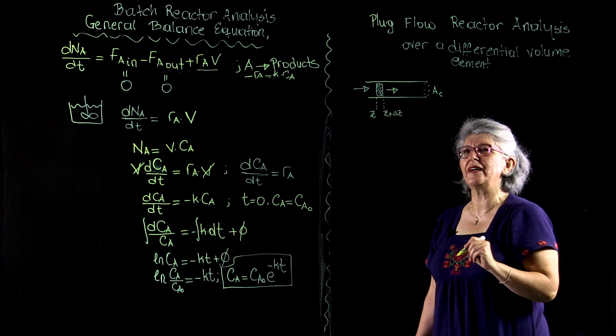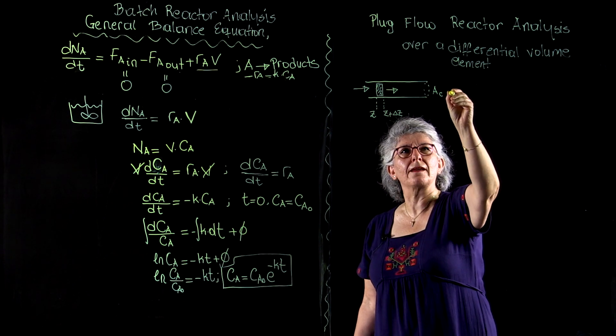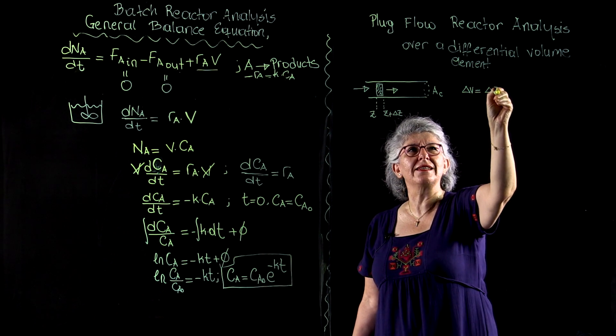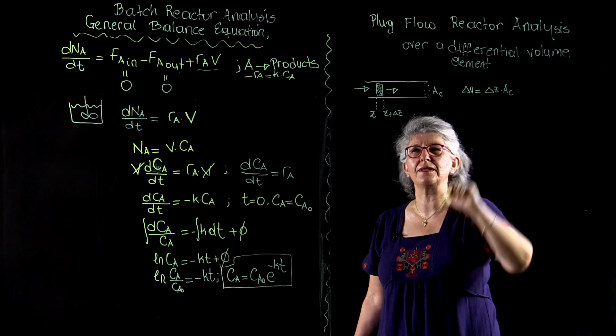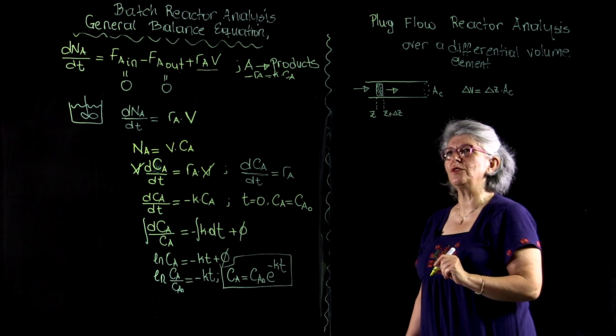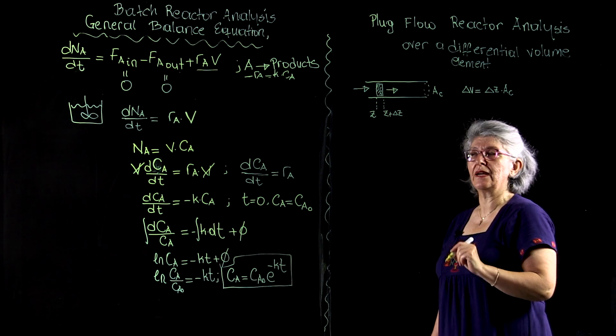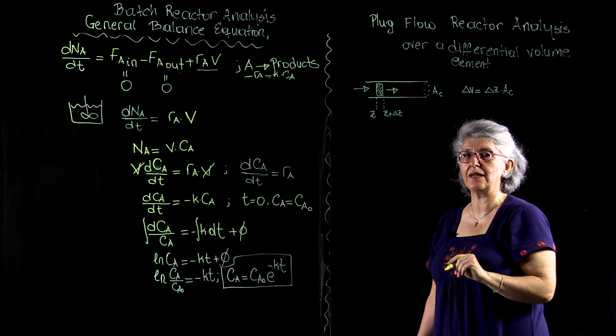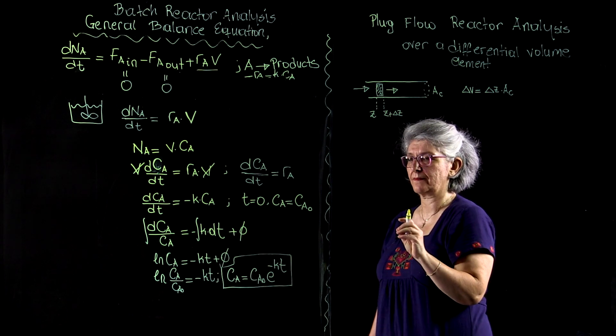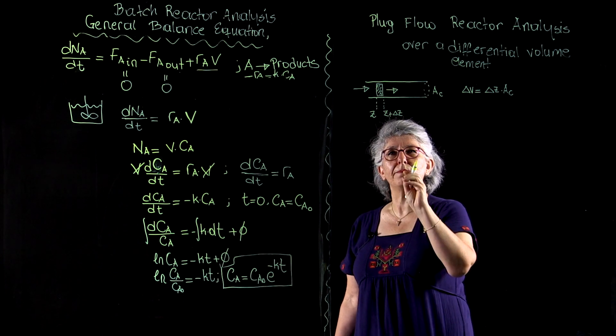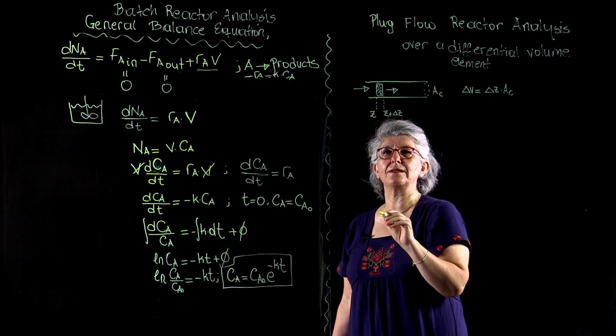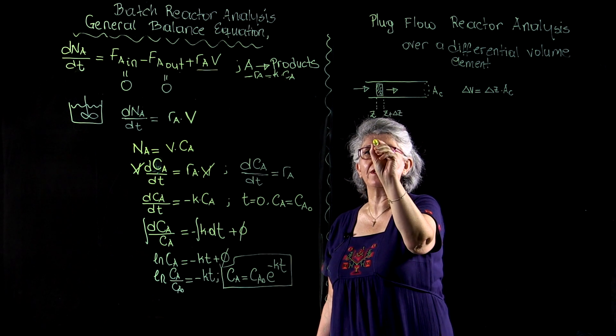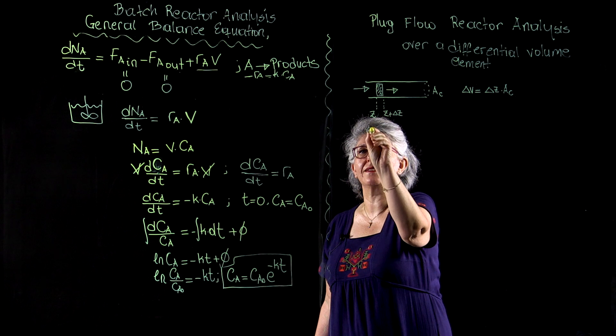My differential volume element is Delta V, equal to Delta Z multiplied by a_C. I'm going to write my balance equation under steady state conditions around that differential volume element, not around a macroscopic system boundary but a microscopic differential volume element.